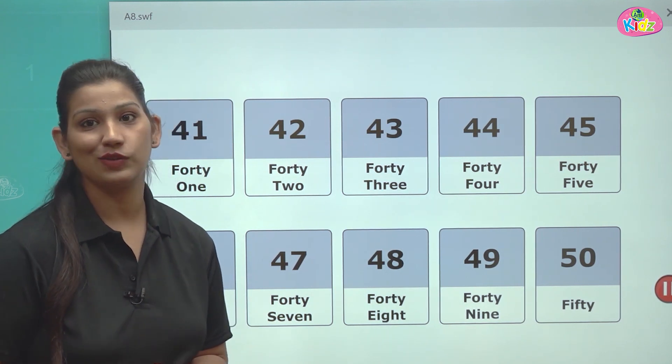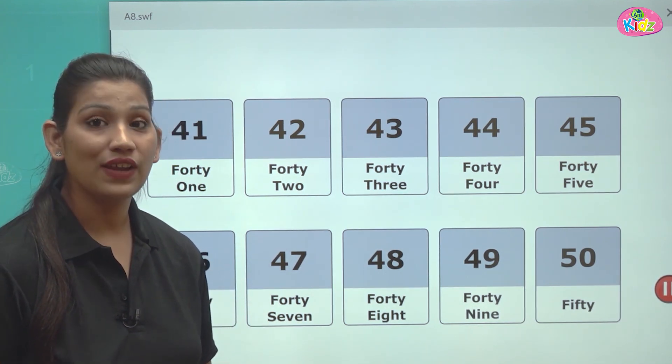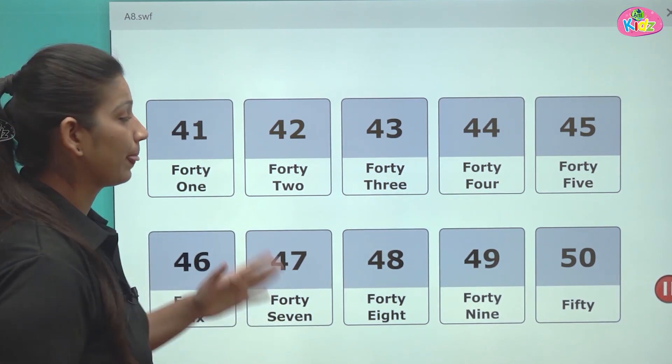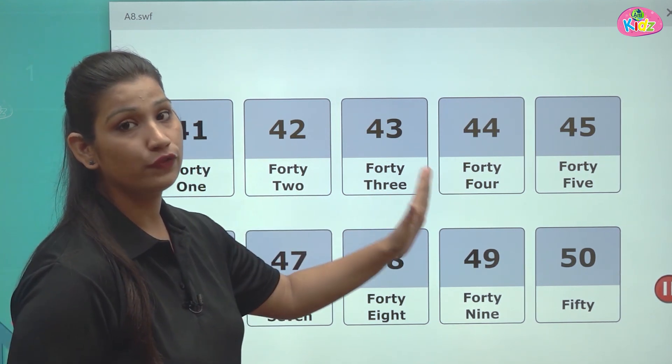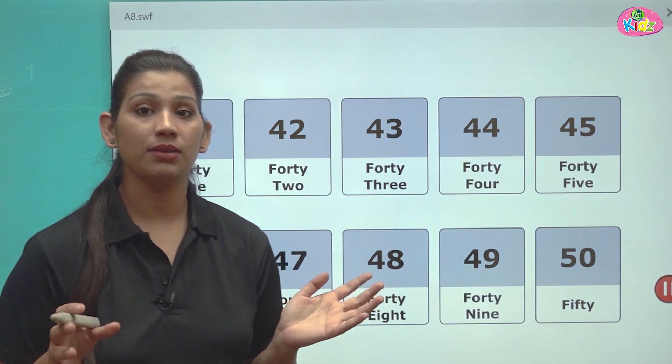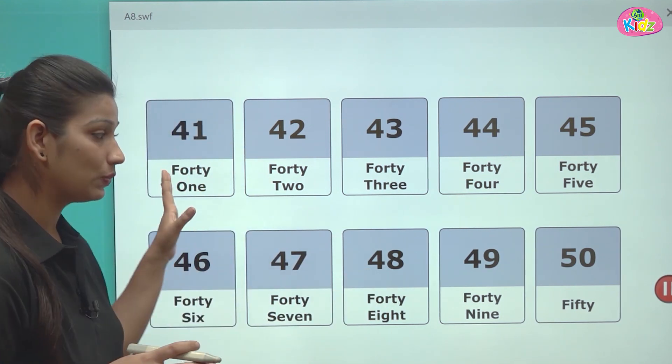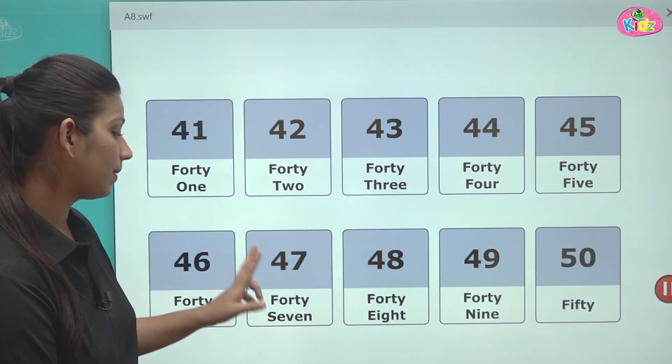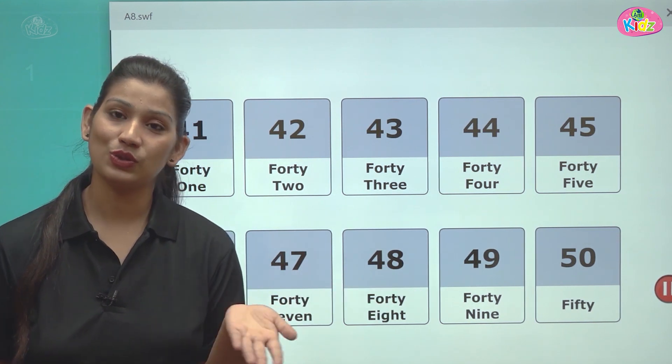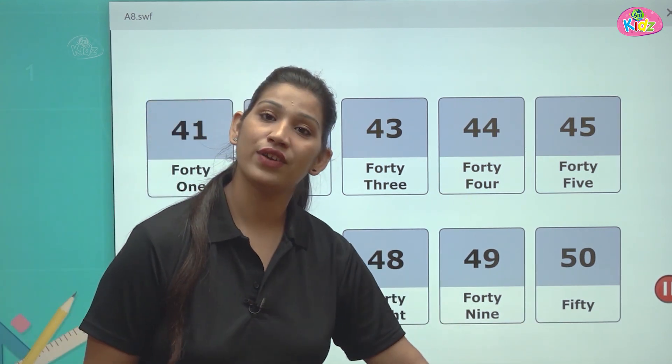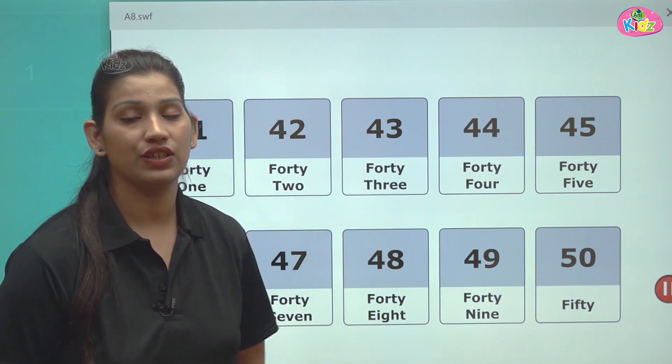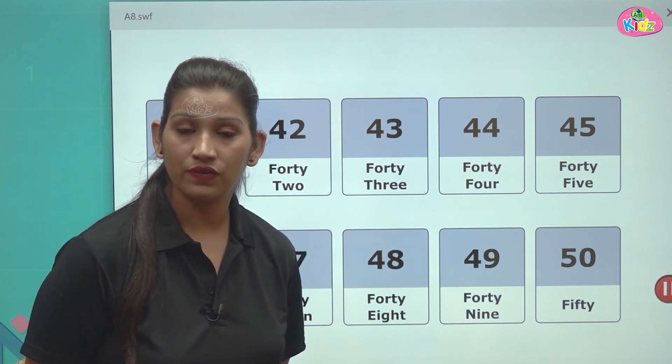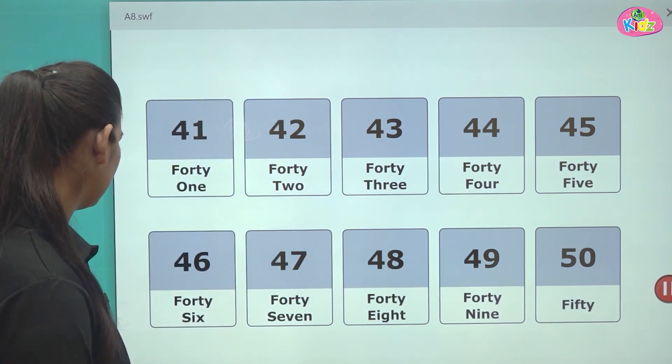Yahan tak hamari half of the counting done ho jati hai, 50. 40 ke spelling aap sabko pata hai, F-O-R-T-Y. Uske saath jab aap 1, 2, 3, 4, add-on karte hain, so that you can make two digits number for 41 to 49. 41 se leke 49 tak aap two digit numbers bana sakte hain, with the spelling of 40 and 1, 2, 3, 4, so on. 49 ke baad aata hai, 50. 49 ke baad jo number aata hai, that is 50. F-I-F-T-Y.